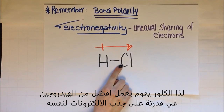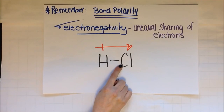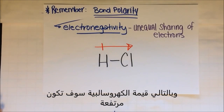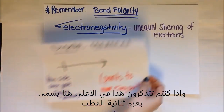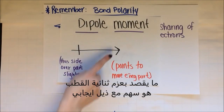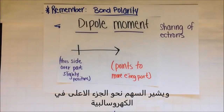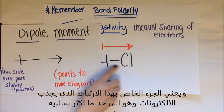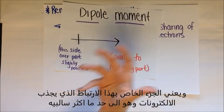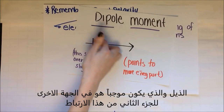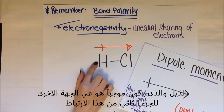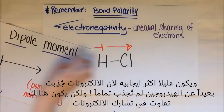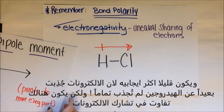Chlorine does a better job of hogging electrons to itself than hydrogen, so its electronegativity value is going to be higher. This arrow with a little positive tail is called a dipole moment. The arrow points towards the more electronegative part — the part hogging the electrons, which is somewhat more negative. The tail, which is positive, is on the other side, slightly more positive because the electrons are being pulled away from the hydrogen. Not completely — it's an uneven sharing of electrons.